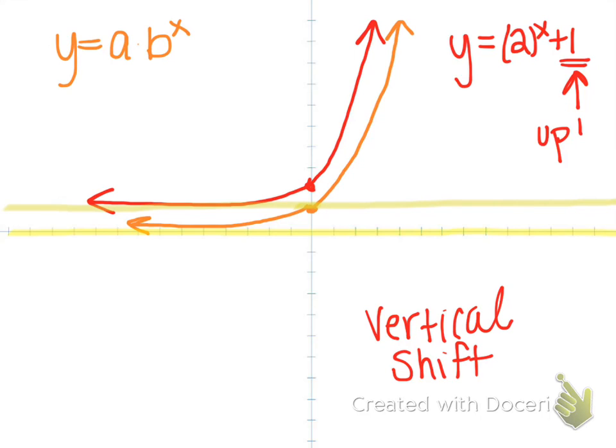Let's see if you can try one. If I gave you y equals 2 to the x minus 4, this means that the parent function originally has an asymptote at 0, y equals 0. But now we're going to shift it down 4. So it's going to now be down here at y equals negative 4. And we always write the equation of this line because it's a horizontal line.